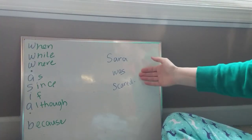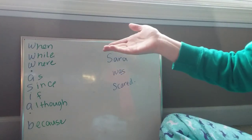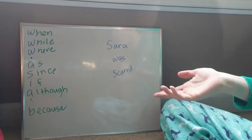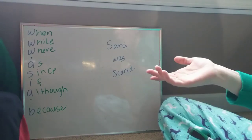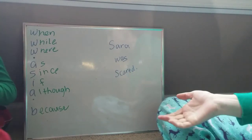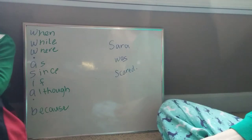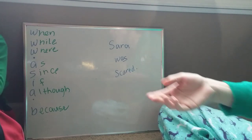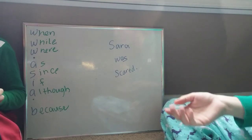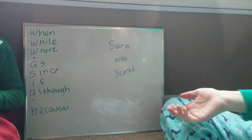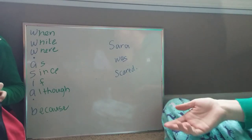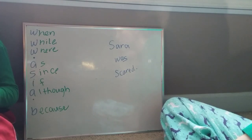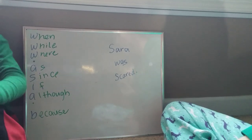So we take our sentence 'Sarah was scared' and add a clausal opener: 'When Sarah jumped in the lake, Sarah was scared.' Or 'While running away from dinosaurs, Sarah was scared.' 'Where there are spiders, Sarah was scared.' 'As Sarah walked into a spiderweb, Sarah was scared.' 'Since Sarah walked into a spiderweb, Sarah was scared.' 'If Sarah walks into a spiderweb, Sarah will be scared.' 'Although there were no spiderwebs, Sarah was scared.' 'Because there were spiderwebs, Sarah was scared.' So this is just another opener to add — it'll be different than the clause in the paper, so they'll have two of them now.